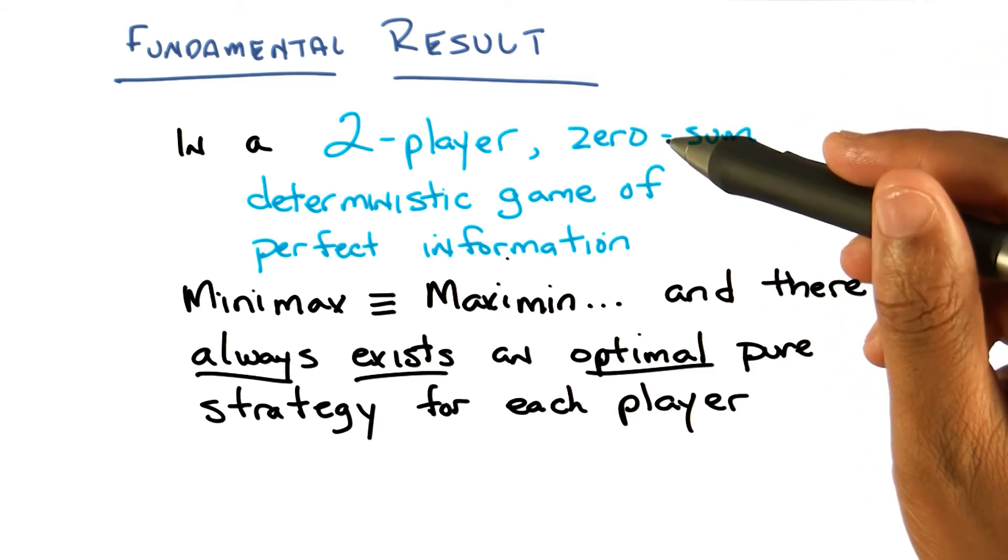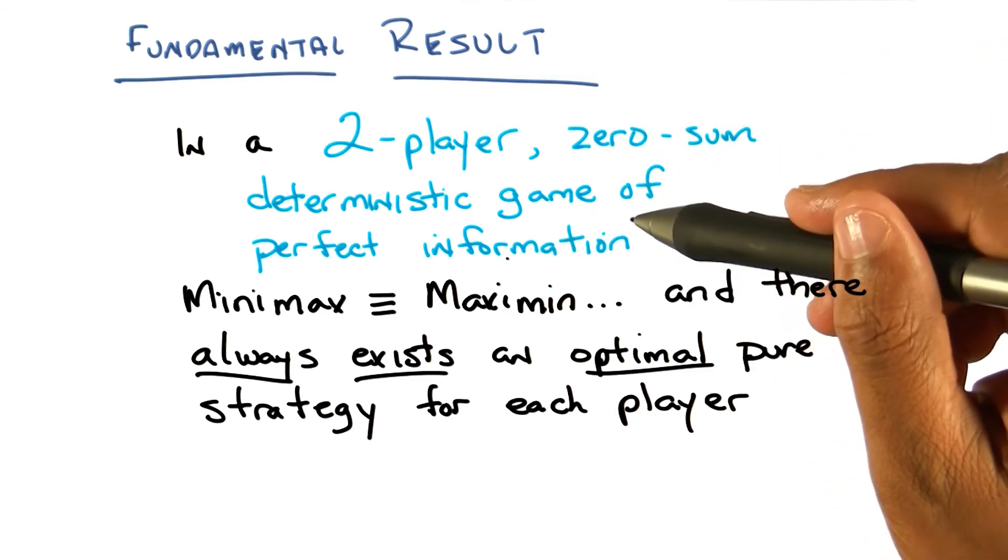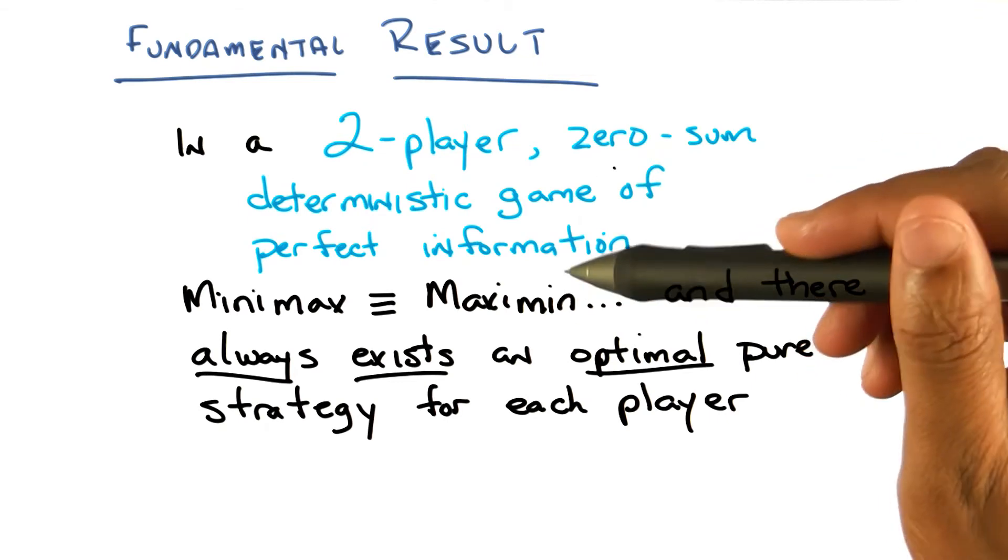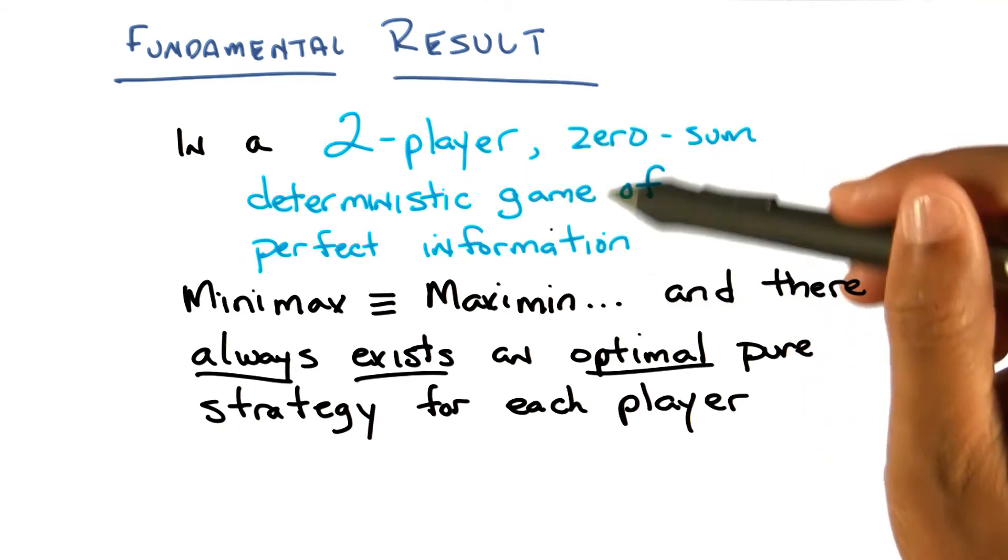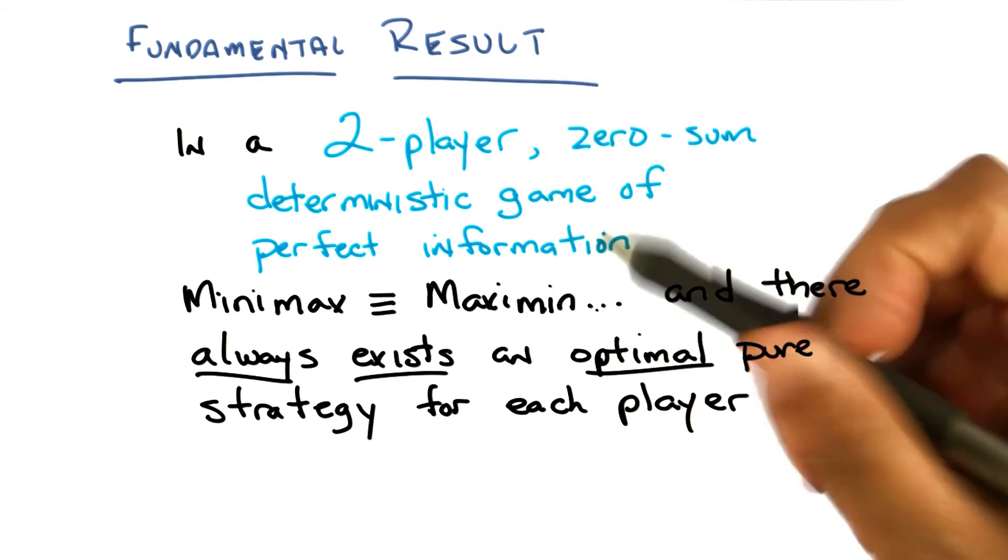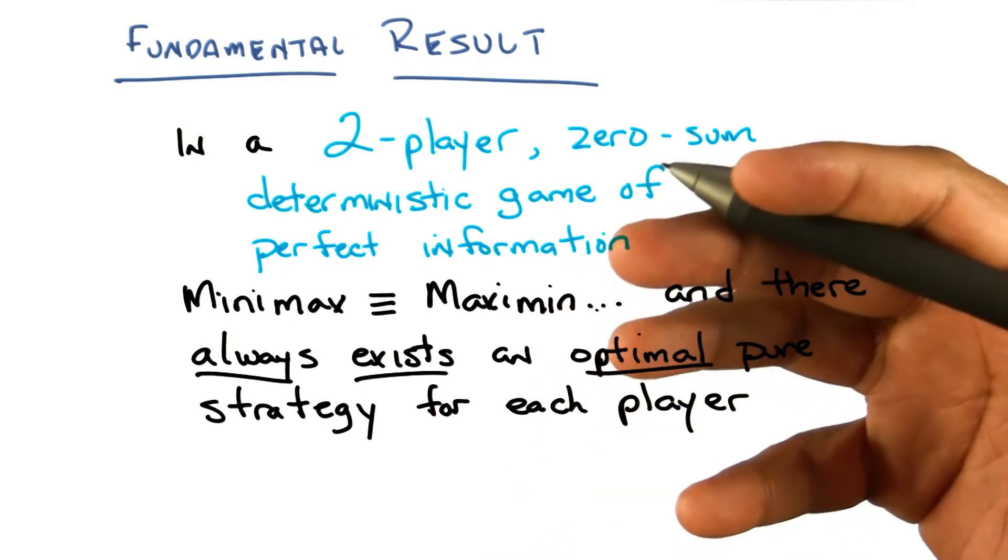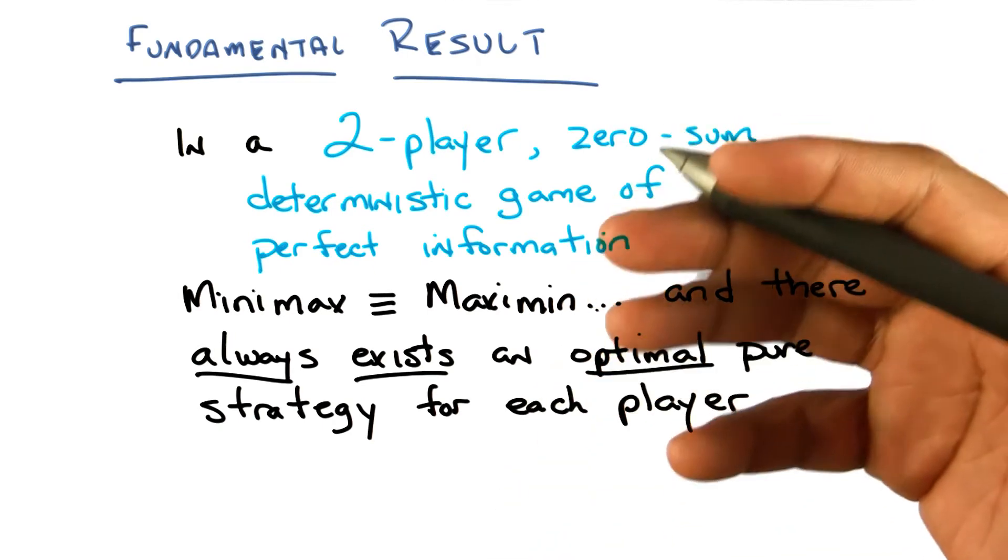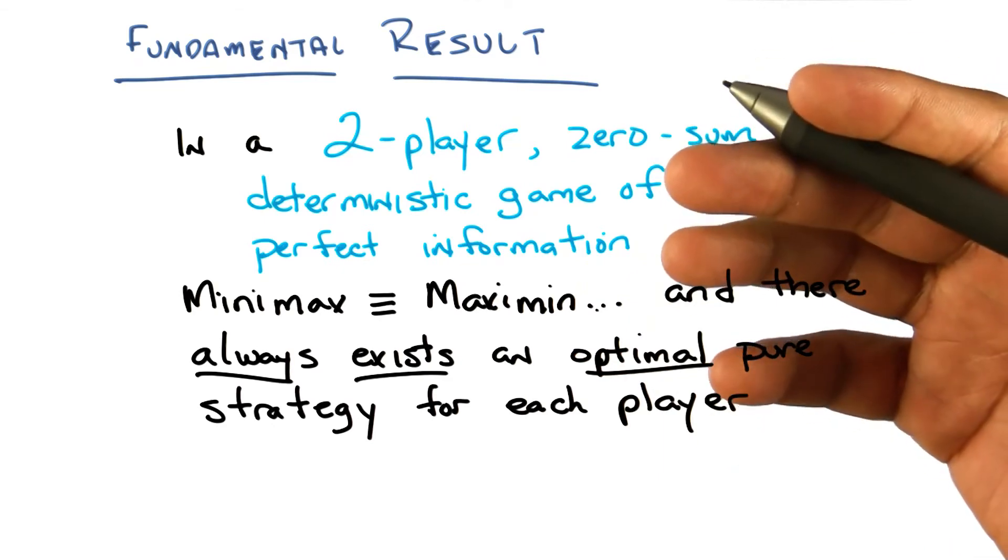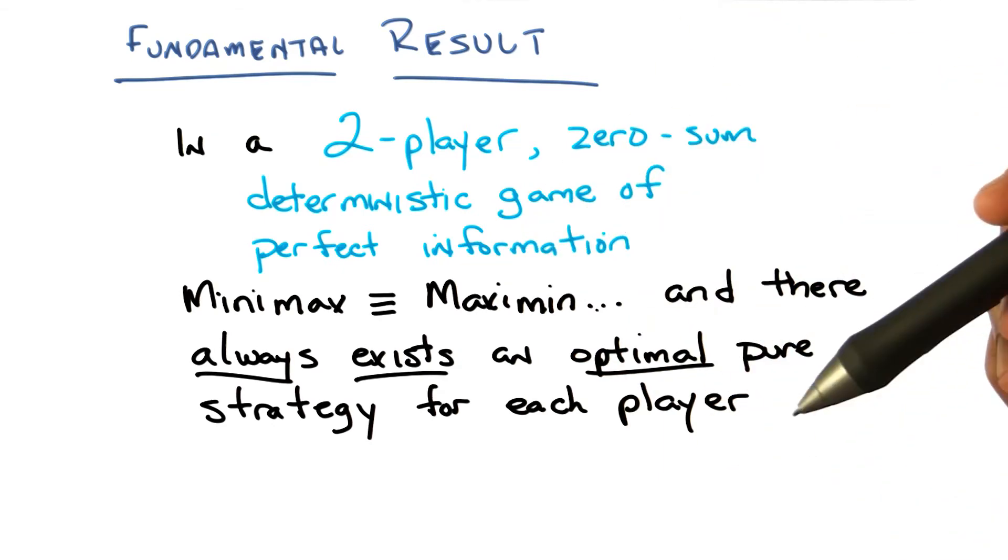Now, if we weren't in a two-player, zero-sum, deterministic game of perfect information, that might not be the case. But in a case where we're in this simplest version, where everyone's being rational, that is trying to maximize their own reward and is assuming everyone else is maximizing their own reward, this is the right thing to do.